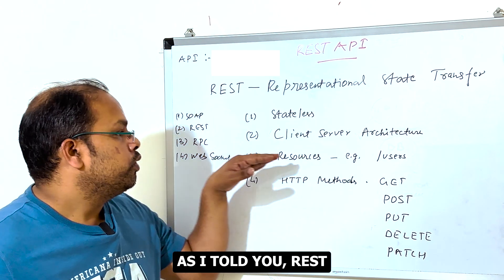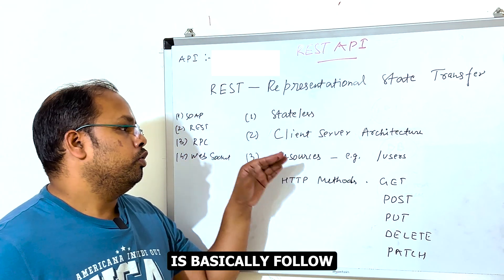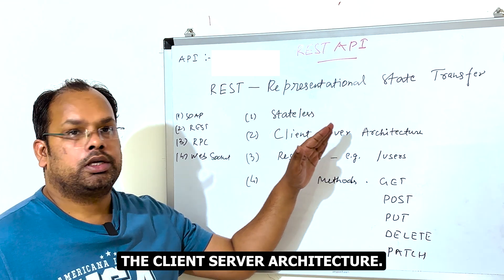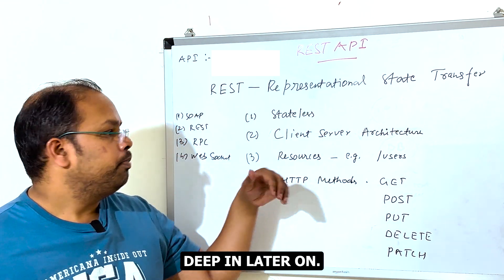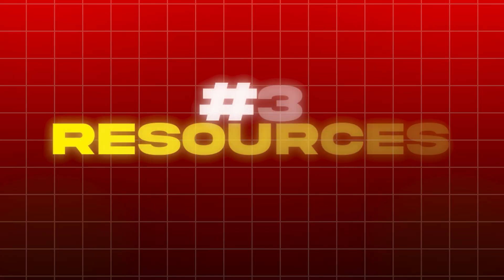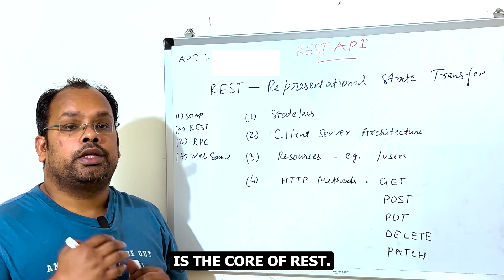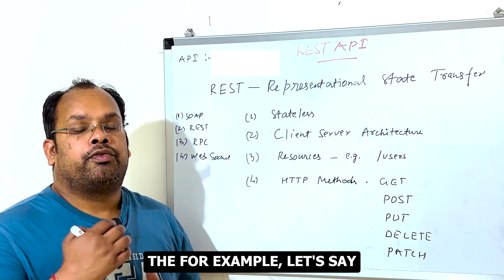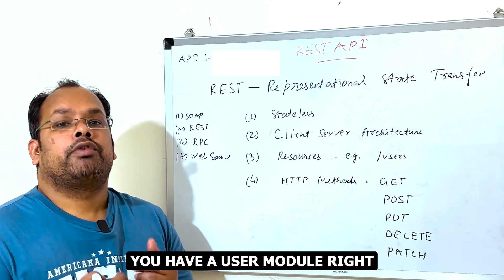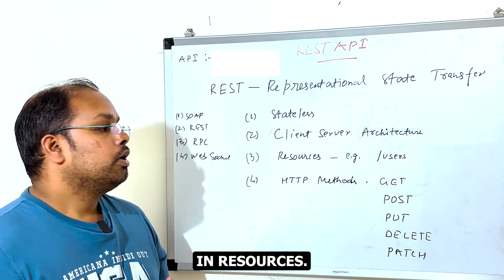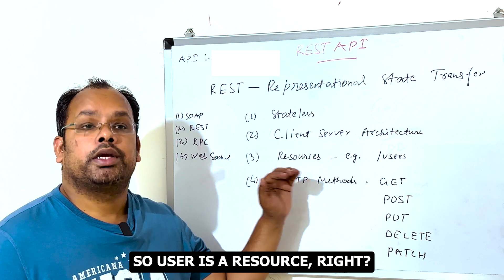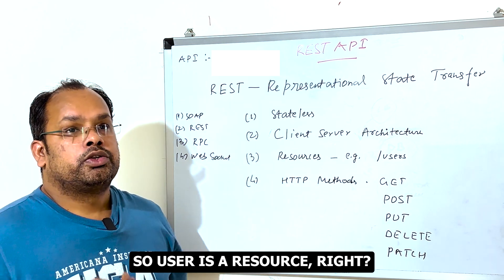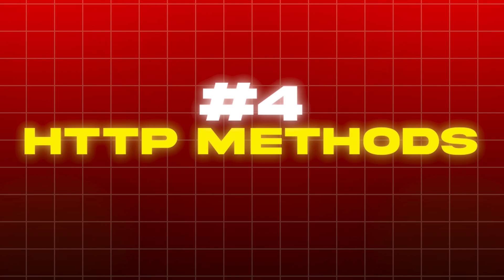The second principle is that REST follows client-server architecture, which I will go into deeper later on. The third principle is resources — resources are the core of REST. For example, if you have a user module, then user is a resource.